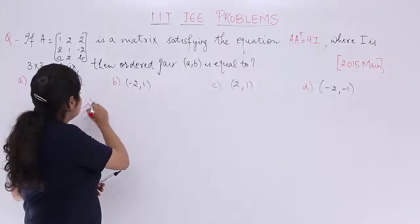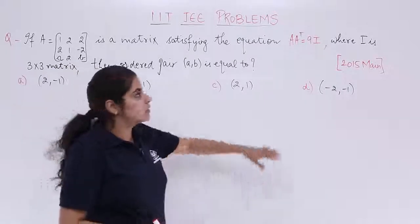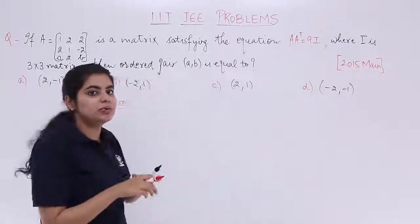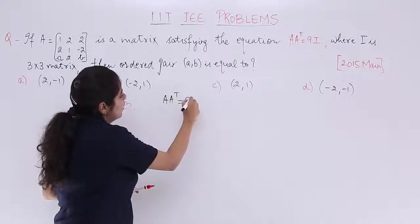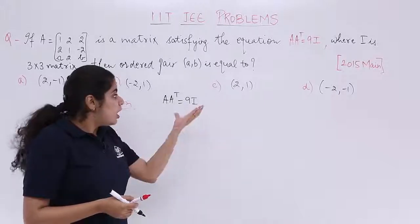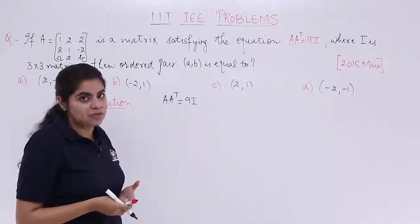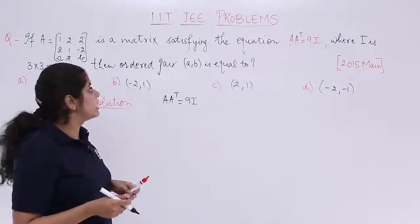Let's write the heading as solution and we'll start. The equation given to me is A into A transpose is equal to 9I. Let's write it again, AA transpose is equal to 9I. The topic of matrices involved in this question is product of matrices because we are basically concentrating on the product.